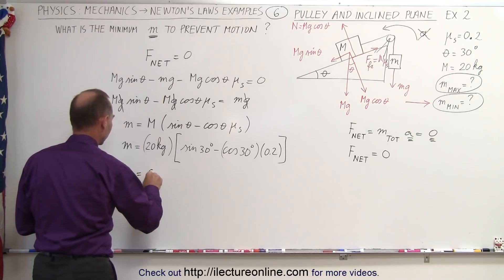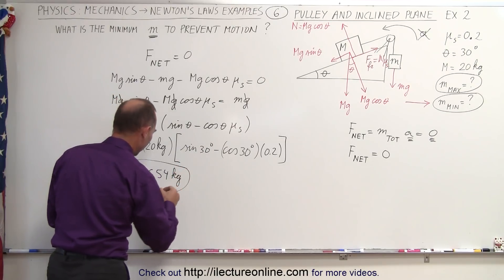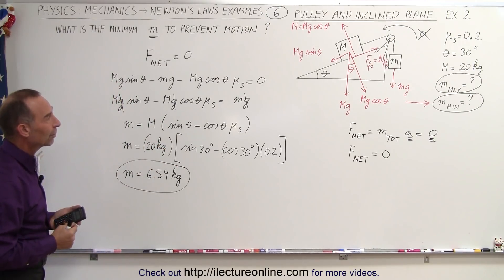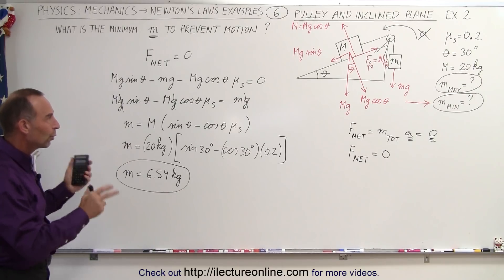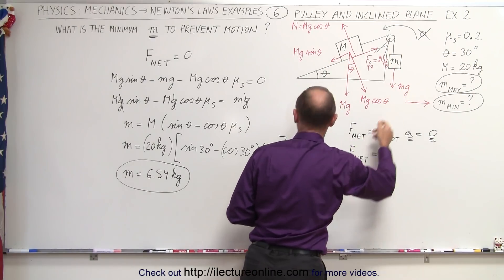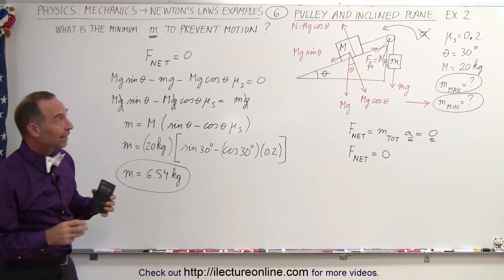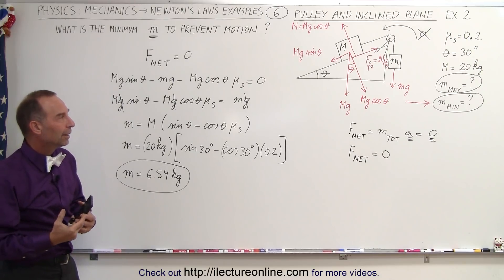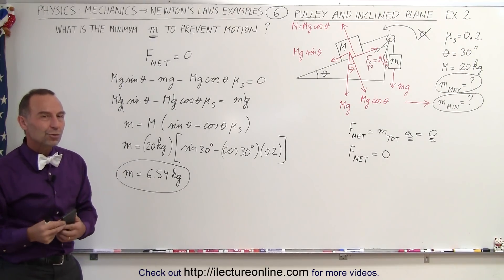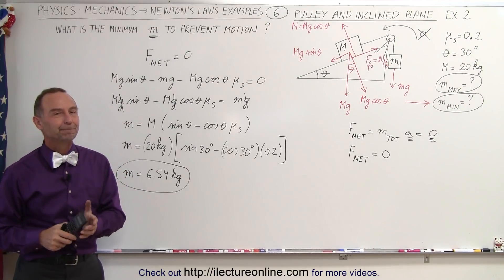We get 6.54 kilograms. So the minimum mass is 6.54 kilograms, and the system will still remain in place. Make it any smaller — 6.53 or smaller — and the whole system will begin to accelerate. If m is greater than a certain value, the system accelerates one way; if it's smaller than this value, it accelerates the other way. In the next example, we'll show what happens when m falls between those two values, where there is no acceleration.